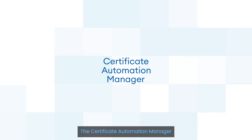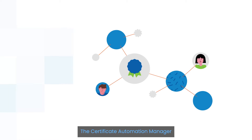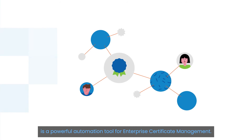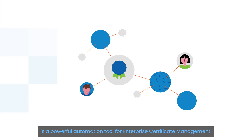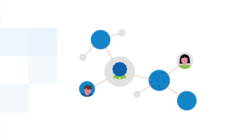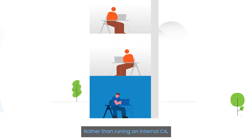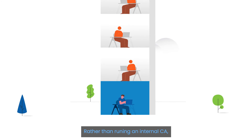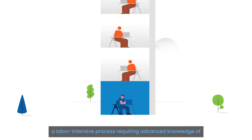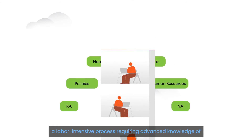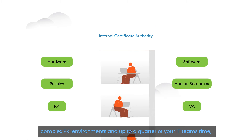The Certificate Automation Manager is a powerful automation tool for enterprise certificate management. Rather than running an internal CA — a labor-intensive process requiring advanced knowledge of complex PKI environments and up to a quarter of your IT team's time —